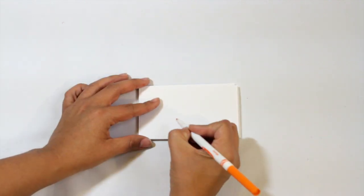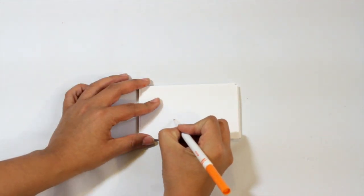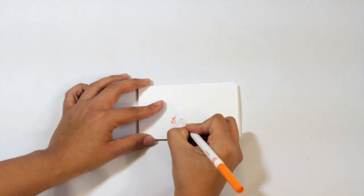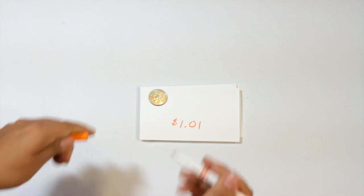And you can up the difficulty level by maybe taking a note card and then just writing how much should be on the coin. So this is for the child that is learning to count money. And you can do this in two ways.